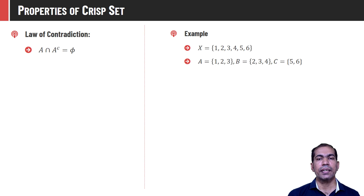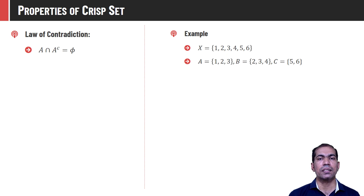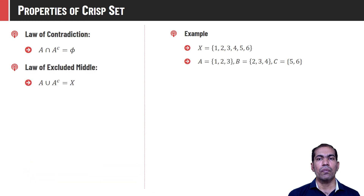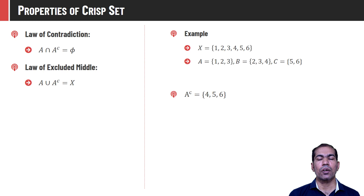The law of contradiction says A intersection A complement will always be phi for a crisp set. By definition, A complement contains all the elements which are not in A, so if we take the intersection of A and A complement we will not find any common elements, and hence their intersection is null. A complement for the given example is {4, 5, 6} whereas A is {1, 2, 3}. And the law of excluded middle states that when we take the union of A and A complement, we get the universal set X — that is the universe of discourse.